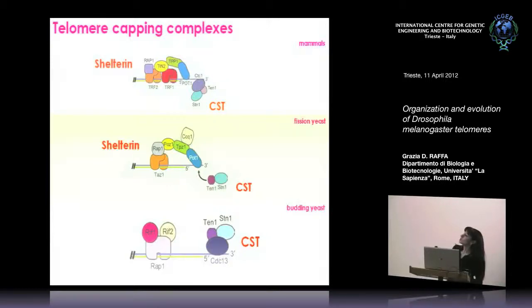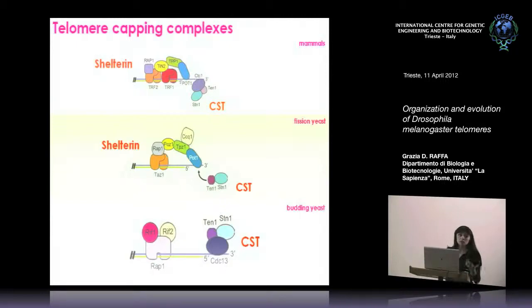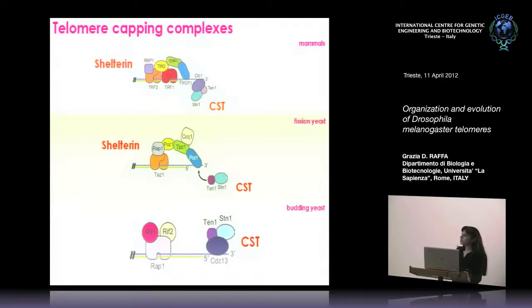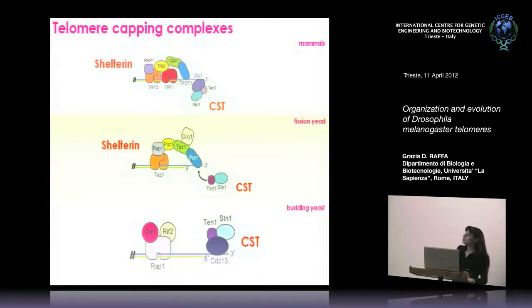Also important for chromosome maintenance is the CST complex formed by STN1, TEN1, and CTC1, which differs from shelterin because it binds telomeric DNA in a sequence-independent fashion and has other functions within the cell. In fission yeast, there is a similar shelterin complex. Even if the primary sequence of these proteins is not strictly conserved, what is conserved is a general architecture. Budding yeast lost shelterin and has a complex formed by RAP1, RIF1, and RIF2, while the CST complex is the main capping complex in budding yeast.